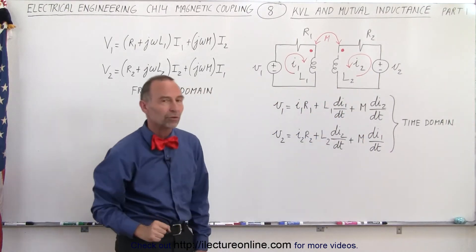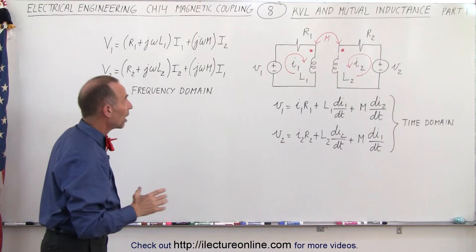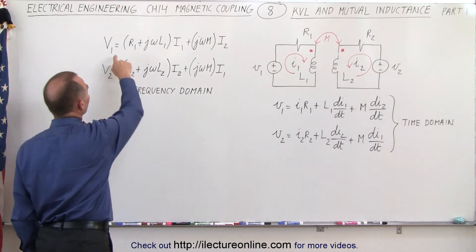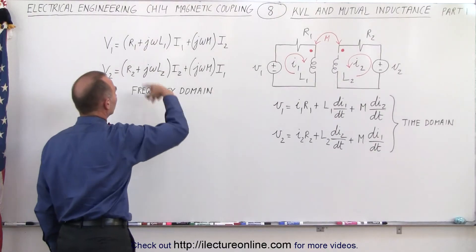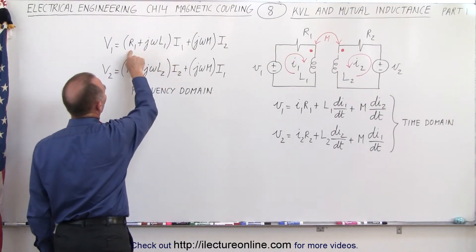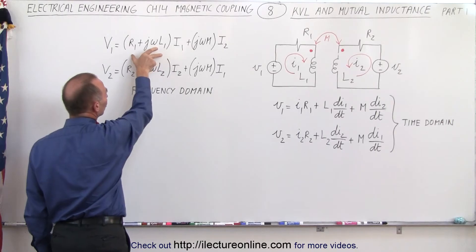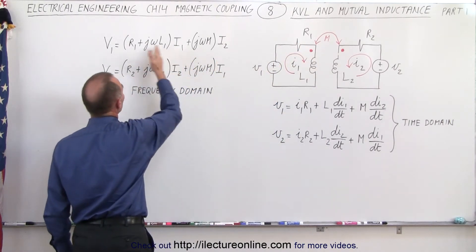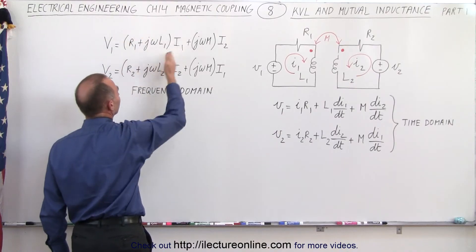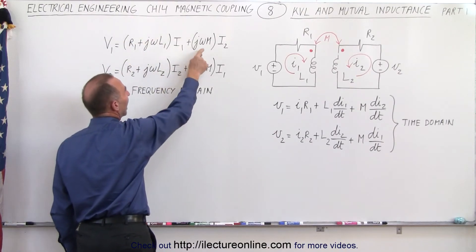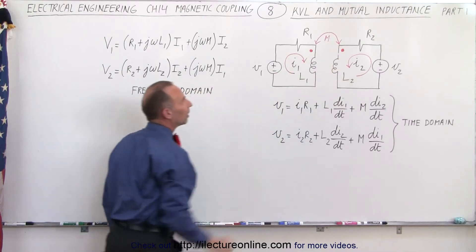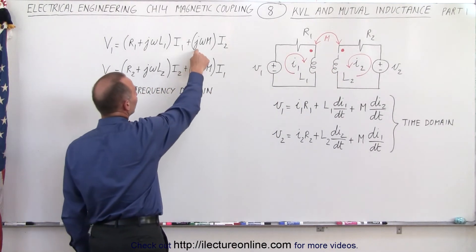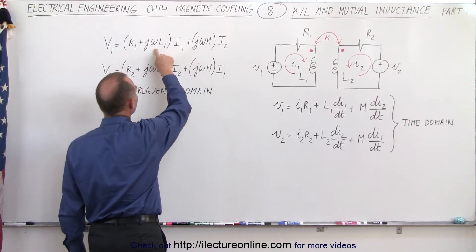These are the equations we use in the time domain. If we now want to write the equations in the frequency domain, the voltage across the entire circuit as we go around is going to be equal to R plus jωL — that's the normal voltage drop, with the time phasing between voltage and current. But we have to add the additional term caused by the coupling of the second inductor in the other circuit, and there we're going to have jωM instead of jωL.